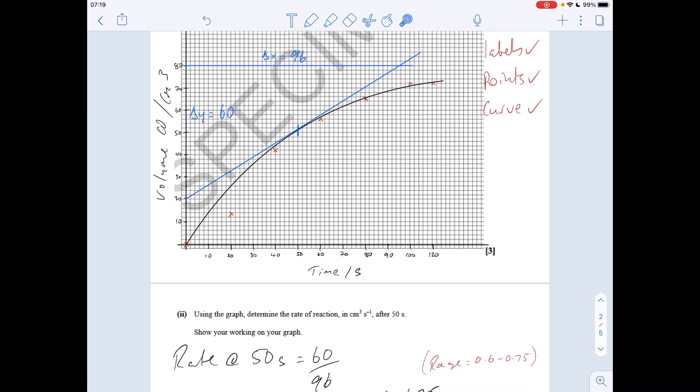What you mustn't do—and it's a classic mistake I see when a student has to calculate rate from a graph like this—you can't just read off the volume at the time and then divide the two. That's not what you do. It's the gradient of the tangent of the curve at that point.